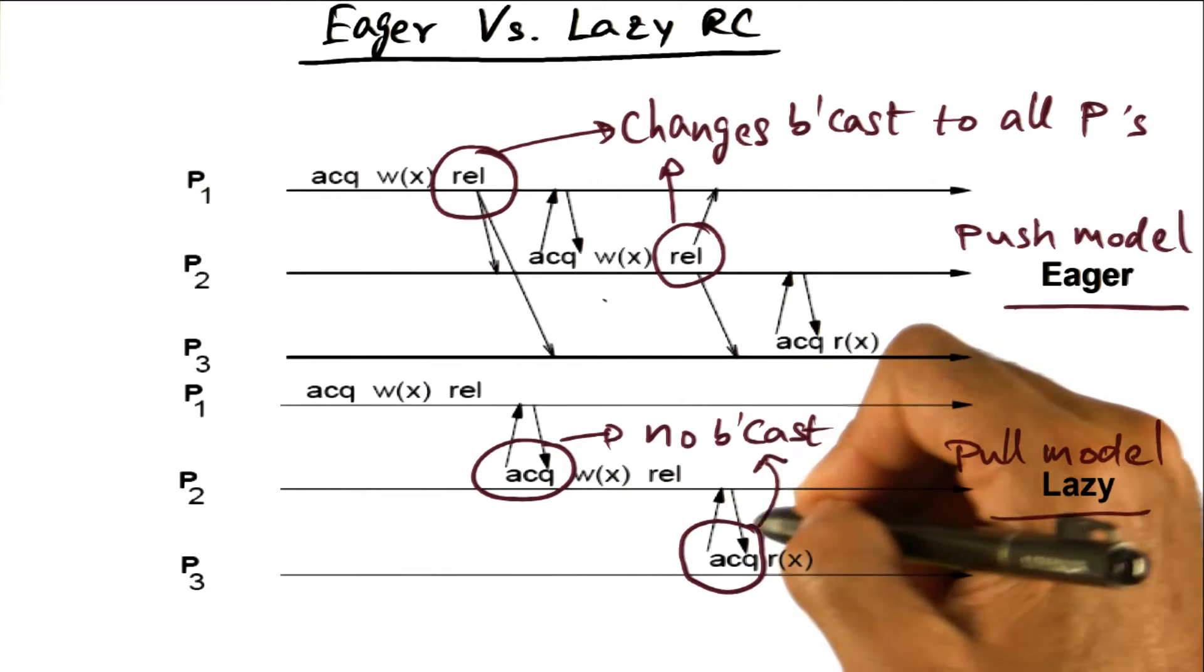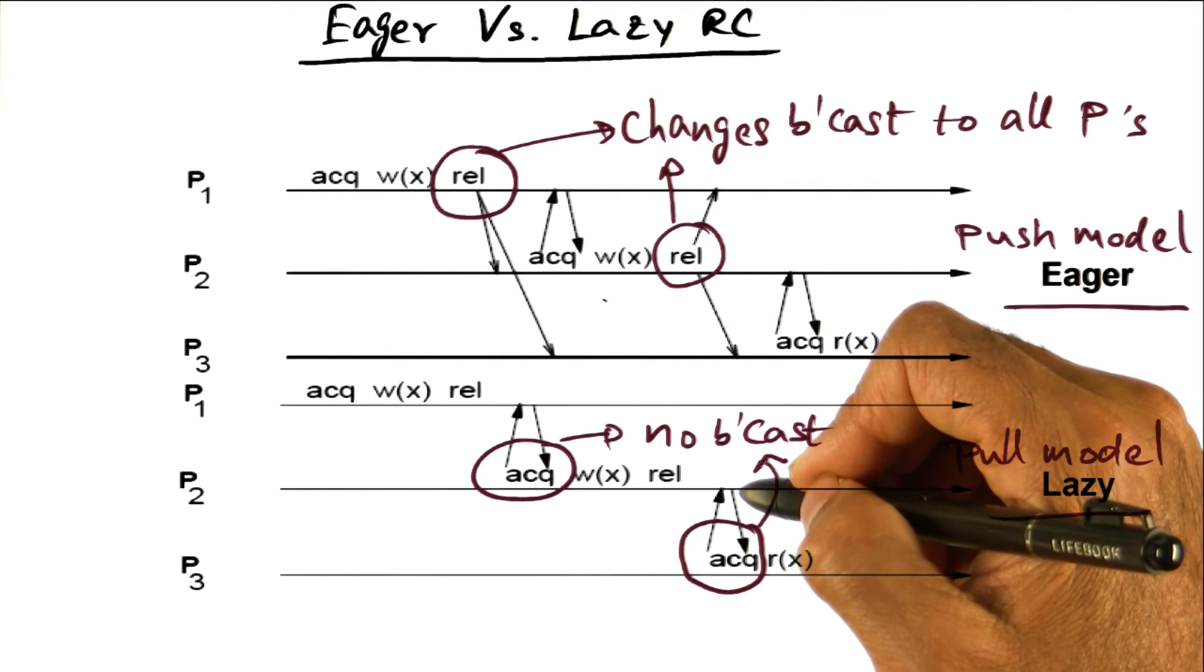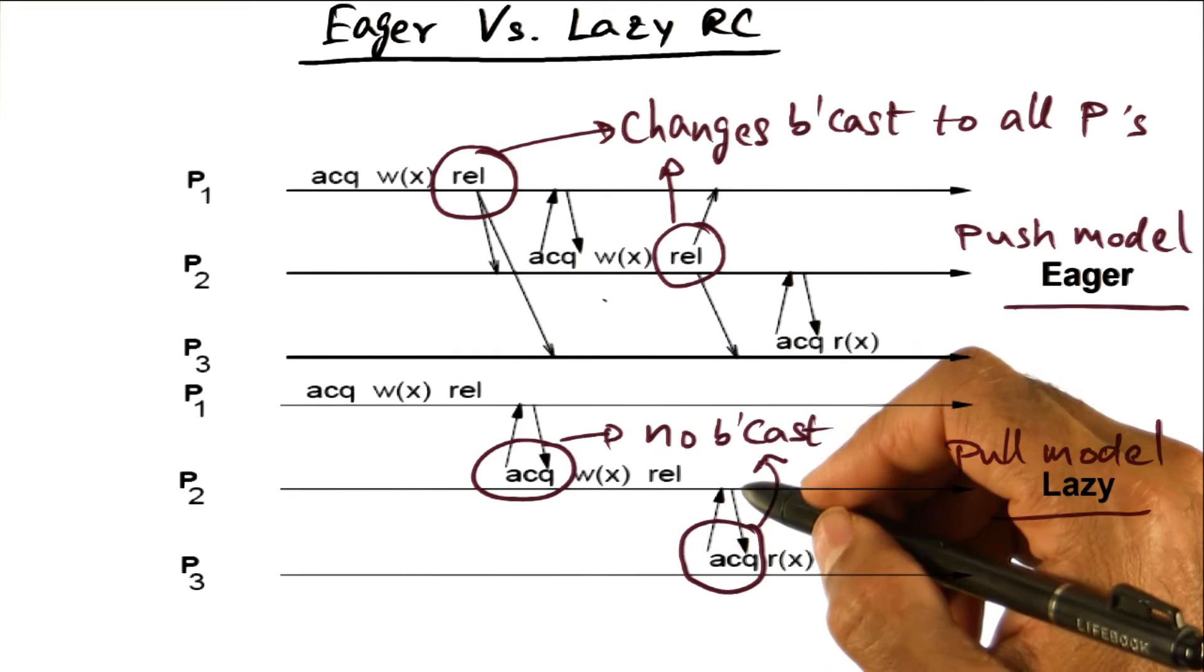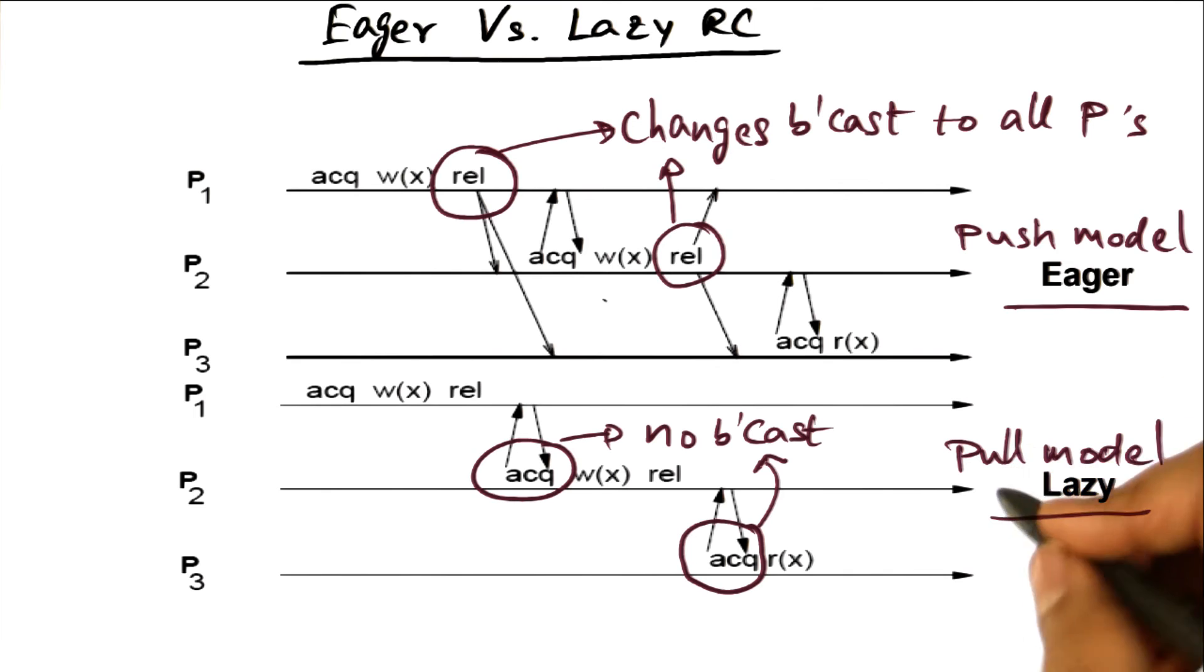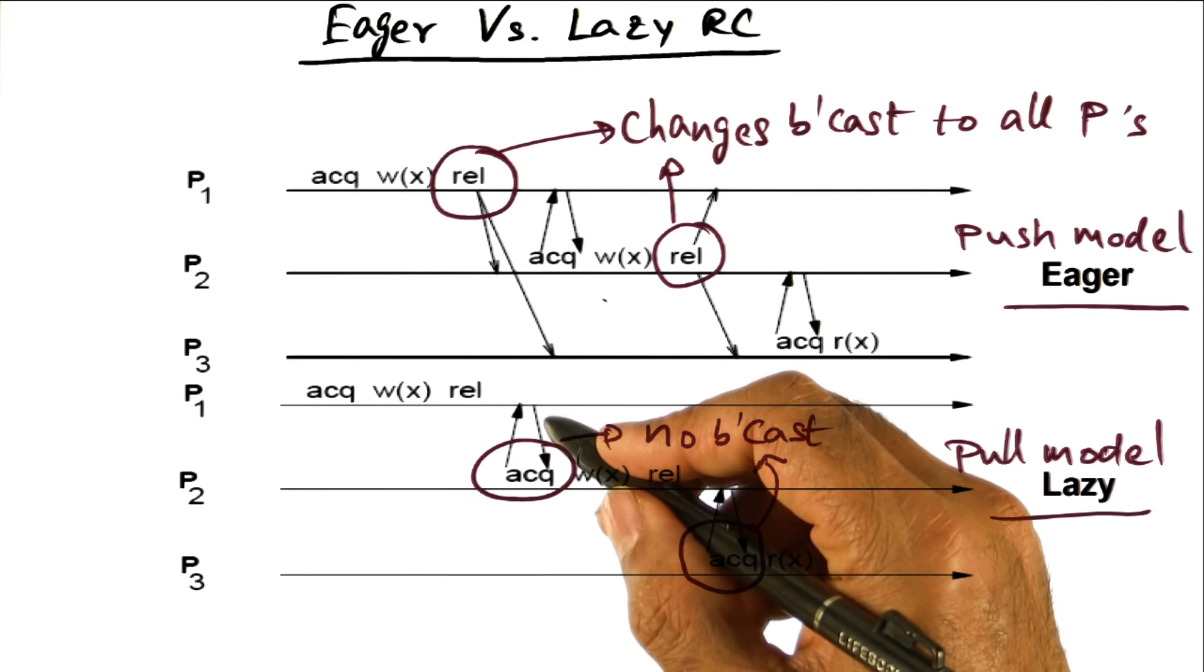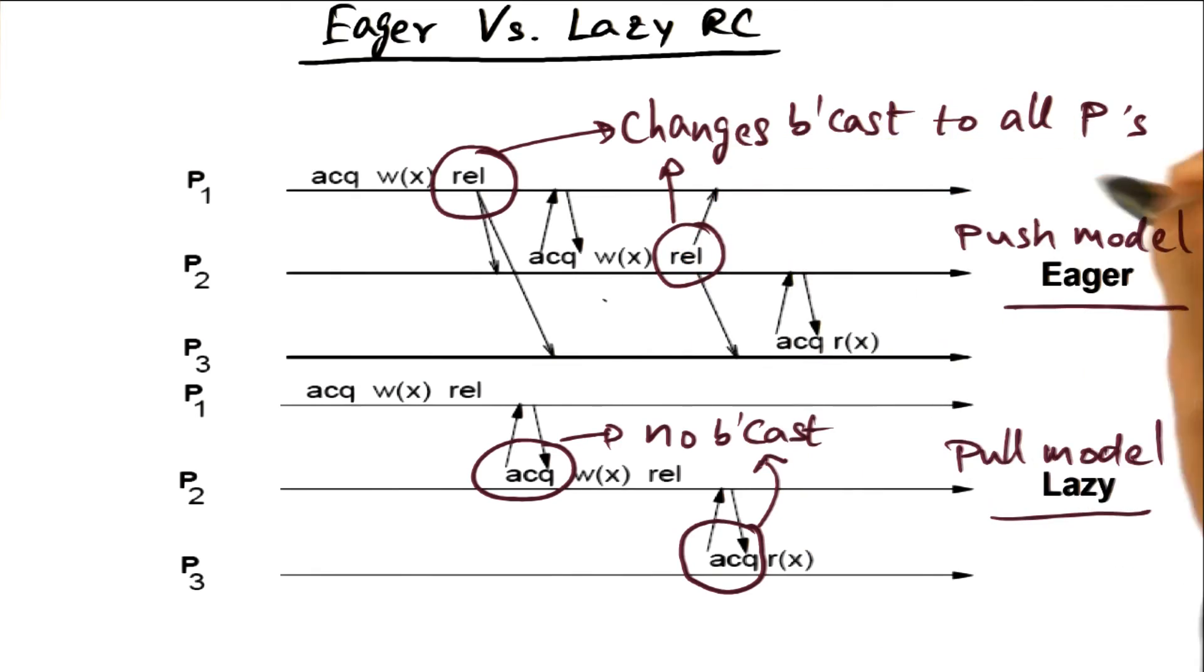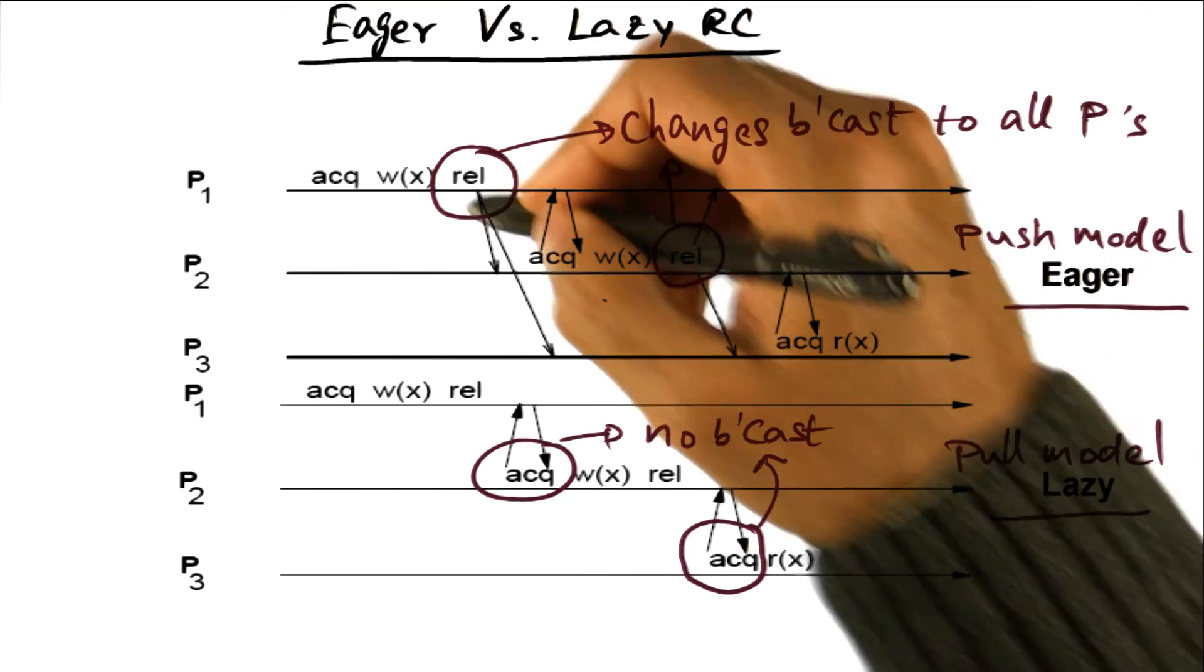And correspondingly, the black arrows here are showing the communication actions for the same set of critical section actions shown in both the top and the bottom half of this particular figure. You can see there's a lot less communication happening with the lazy model. It's also called a pull model because what we're doing is at the point of acquisition, we are pulling the coherence actions that need to be completed. Whereas this is a push model in the sense that we are pushing out the coherence actions to everybody at the point of release.